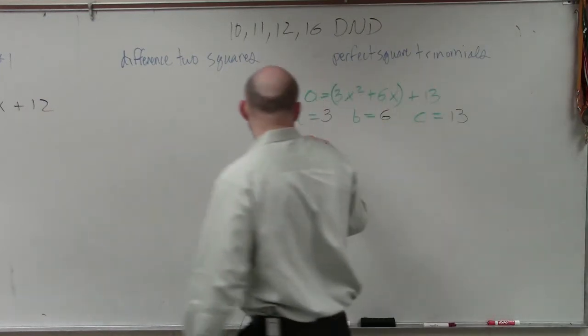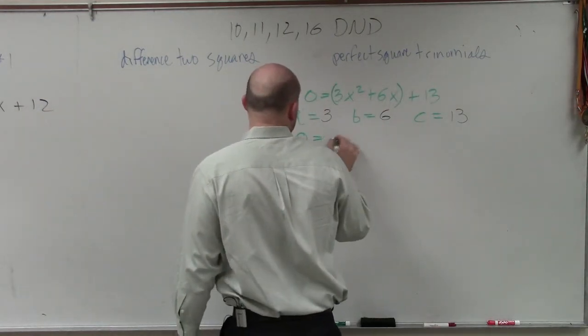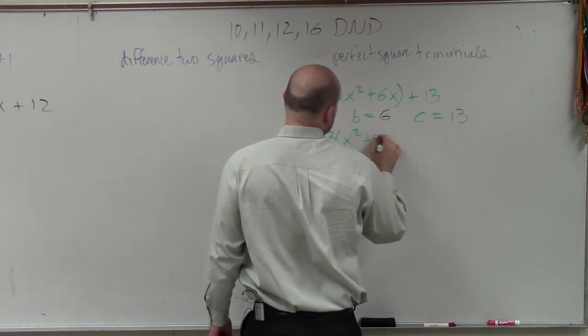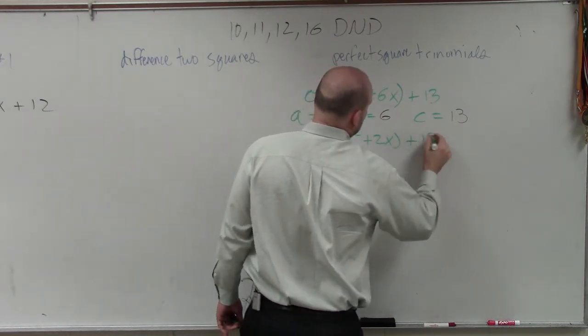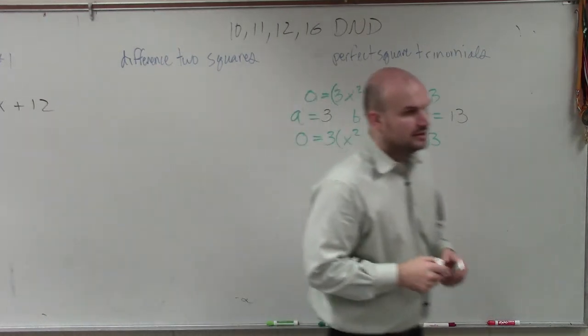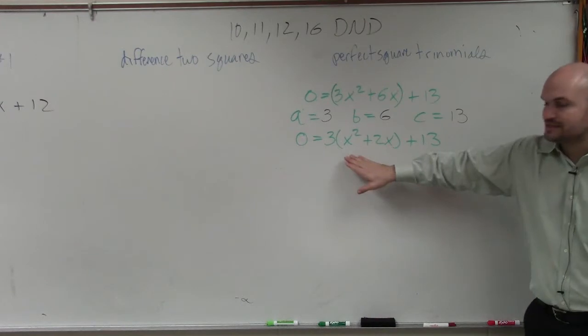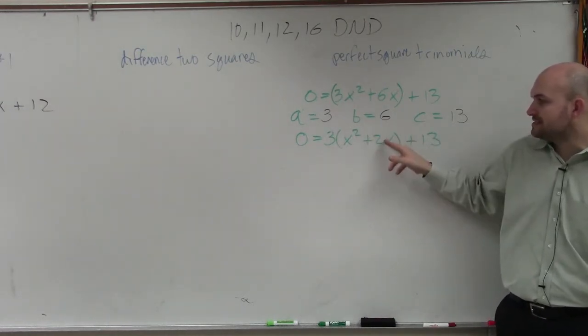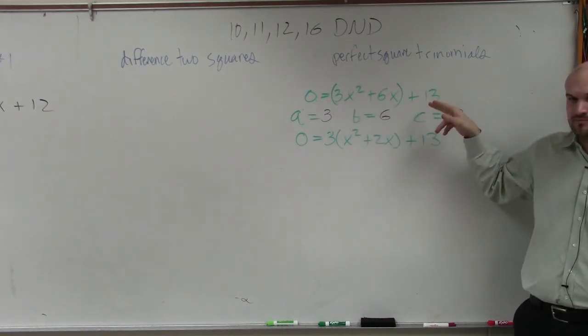So therefore, my equation now is going to look like this. 3 equals, or 0 equals 3 times x squared plus 2x plus 13. Does everybody see that? Does everybody agree that 3 times both of these is the same thing as my original problem?